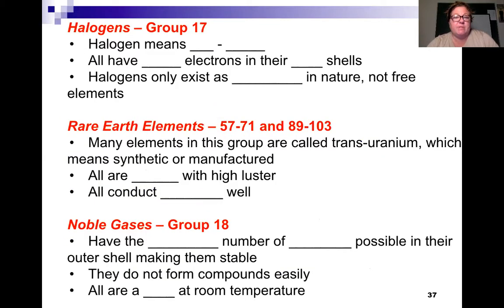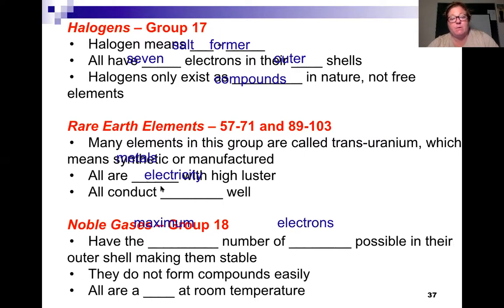The halogens are group 17. Halogen means salt former. They all have seven electrons in their outer shell, and halogens only exist as compounds in nature, not as free elements. The rare earth elements down below, they are all metals and they all conduct electricity very well. Some of them are synthetic, man-made, but not all of them. The noble gases have a maximum number of electrons possible, so they're stable. They don't form compounds easily, and they are all gases at room temperature.